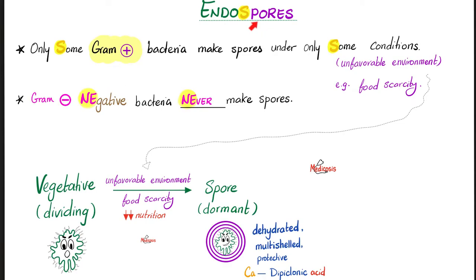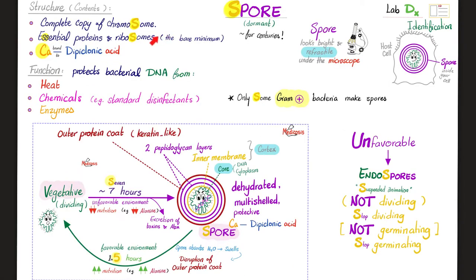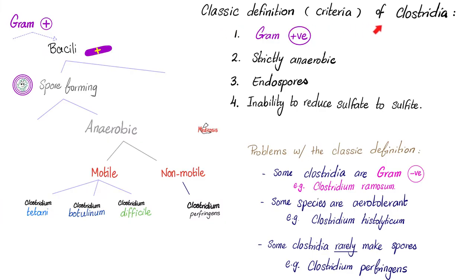Clostridium tetani does make endospores. The spores contain lots of calcium in their structure, and their function is to protect the organism from heat, chemicals, and enzymes — i.e., unfavorable conditions. The classic definition of Clostridia: gram-positive, strictly anaerobic, endospore-forming, and unable to reduce sulfate to sulfite.